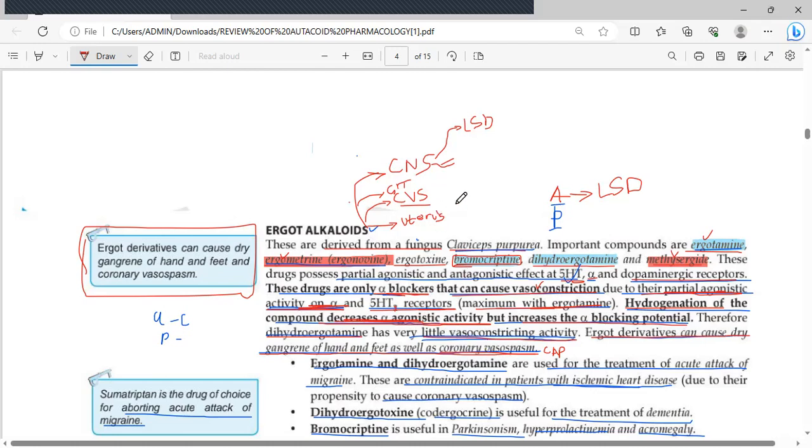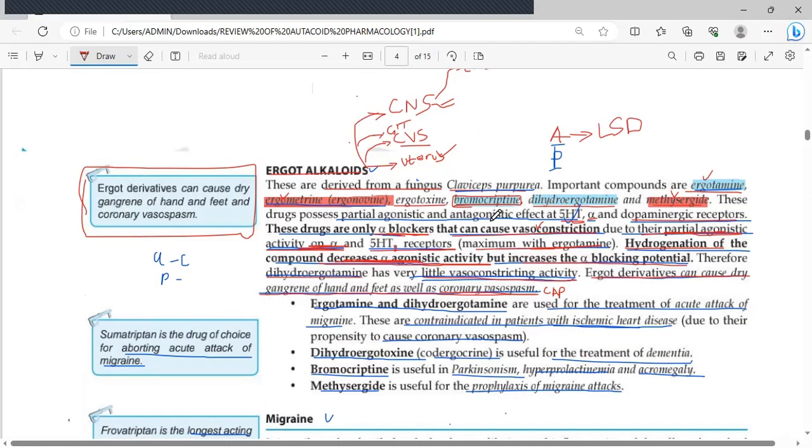The uterine smooth muscles: these ergot alkaloids stimulate muscle contraction. The pregnant uterus is the most sensitive, especially at term, so they can induce labor. I would not use ergot alkaloids on a pregnant woman who is, say, 6 months pregnant, because it can even induce an abortion. So those are some of the actions.